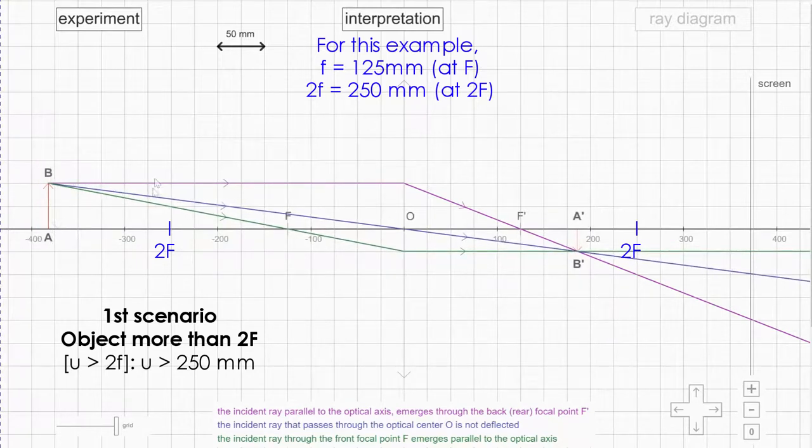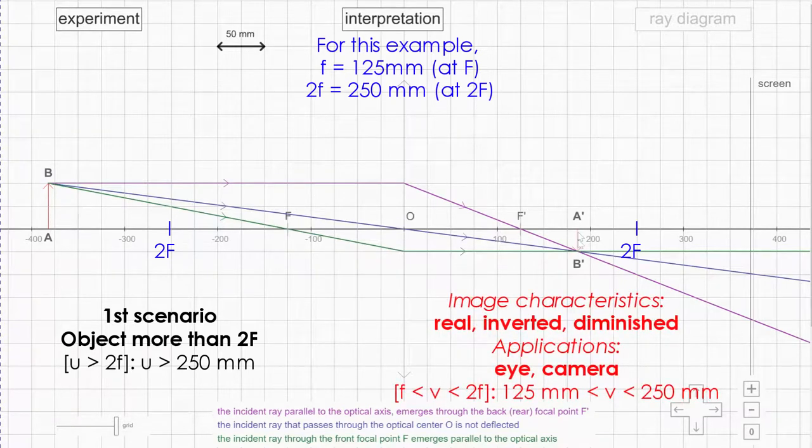Following the three rays, or the two rays rather, you will be able to locate the image. Take a look at the object here. This is real because it can be formed on the screen. It is inverted - you can see that the object is upright and the image here is inverted. And it is diminished, meaning it's smaller compared to the object. The application for this is your eye or your camera.